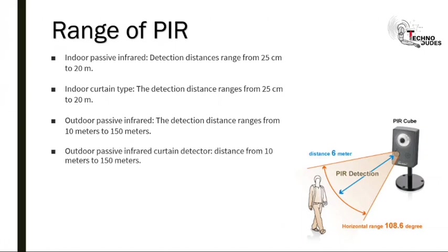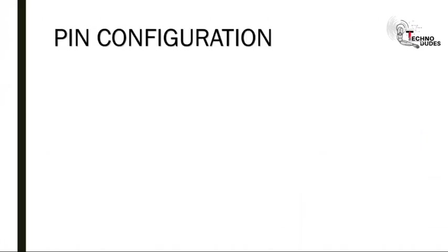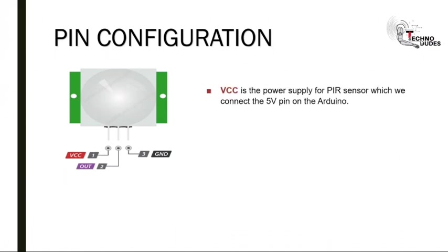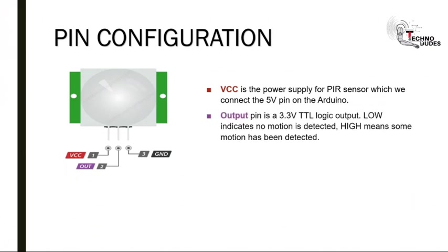Pin configuration: the first pin is VCC, the second is the output pin, and the third is the ground pin. VCC is the power supply connected to the 5V pin of Arduino. The output pin is a 3.3V TTL logic output — low indicates no motion detected, and high means motion has been detected.